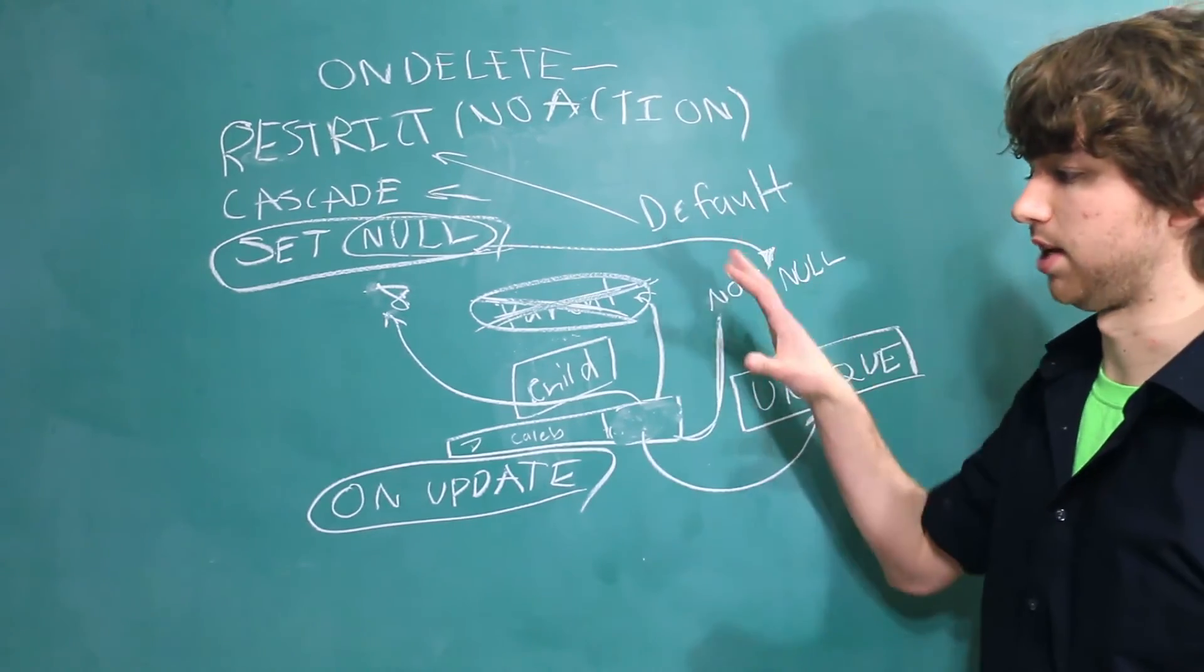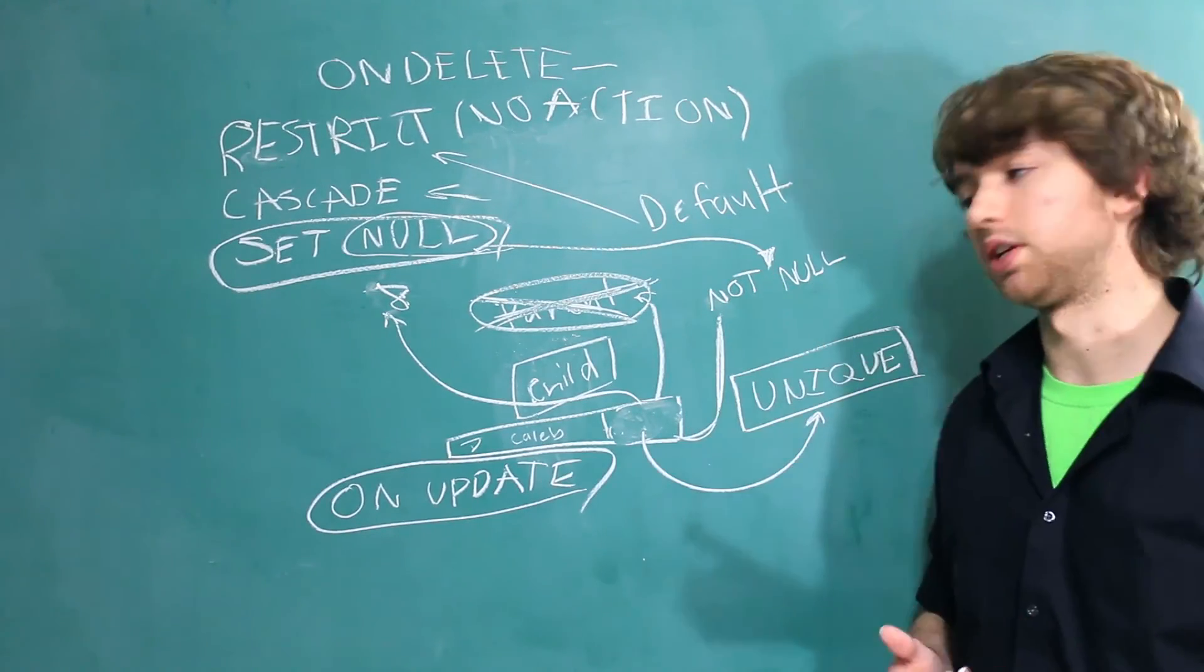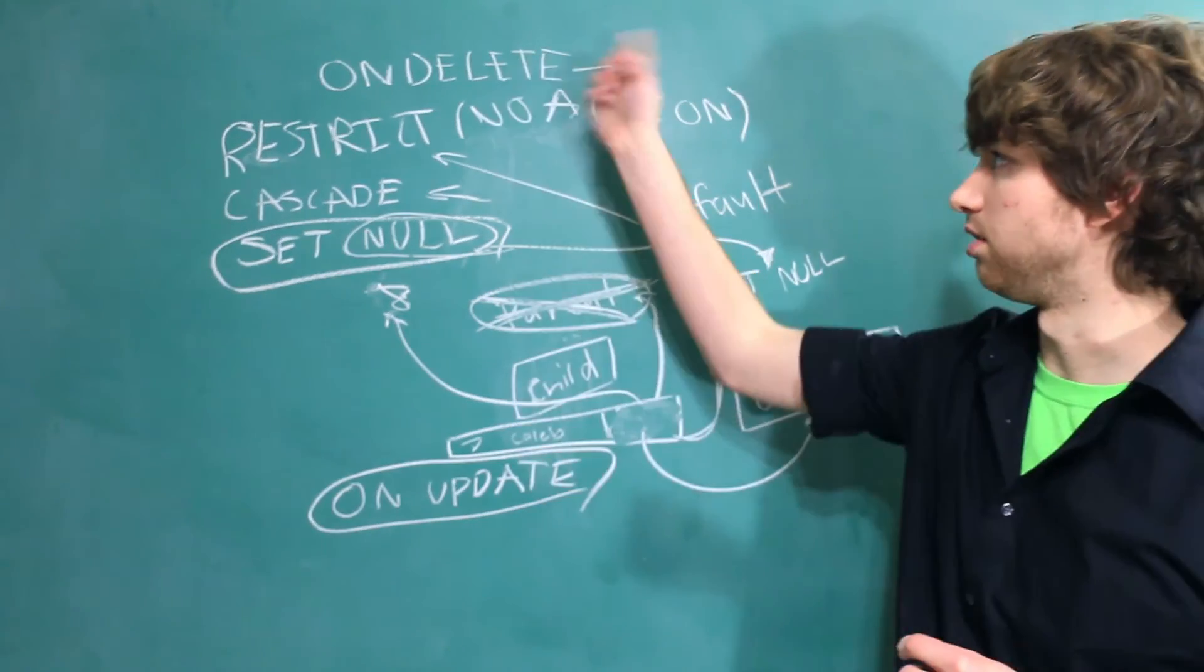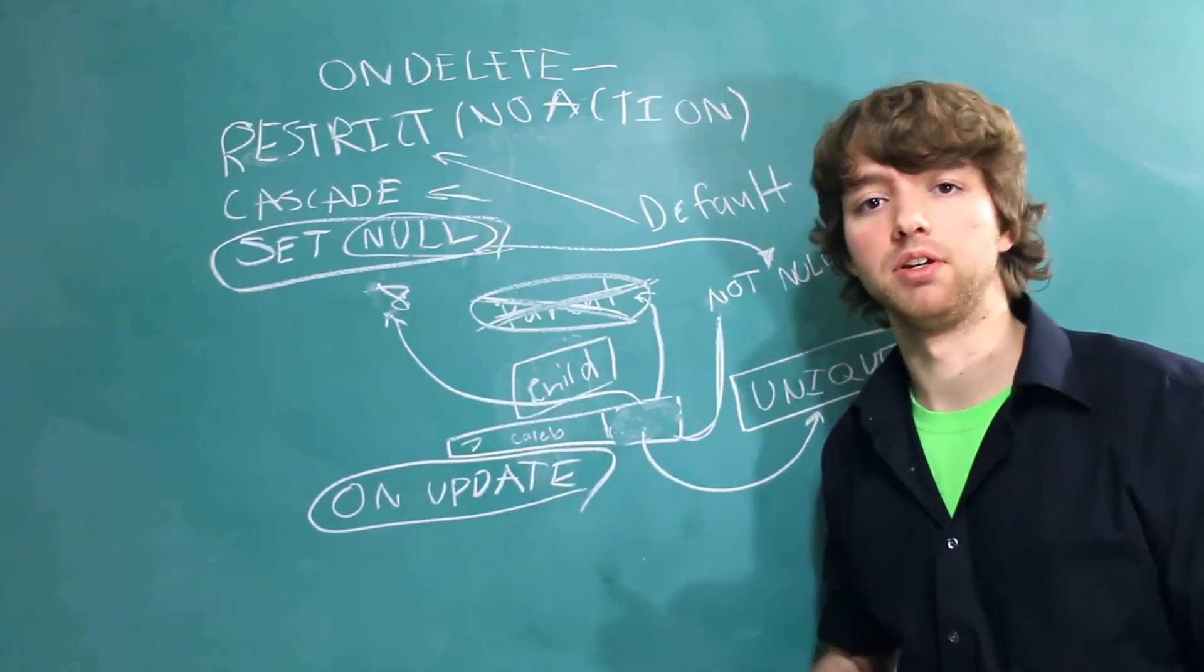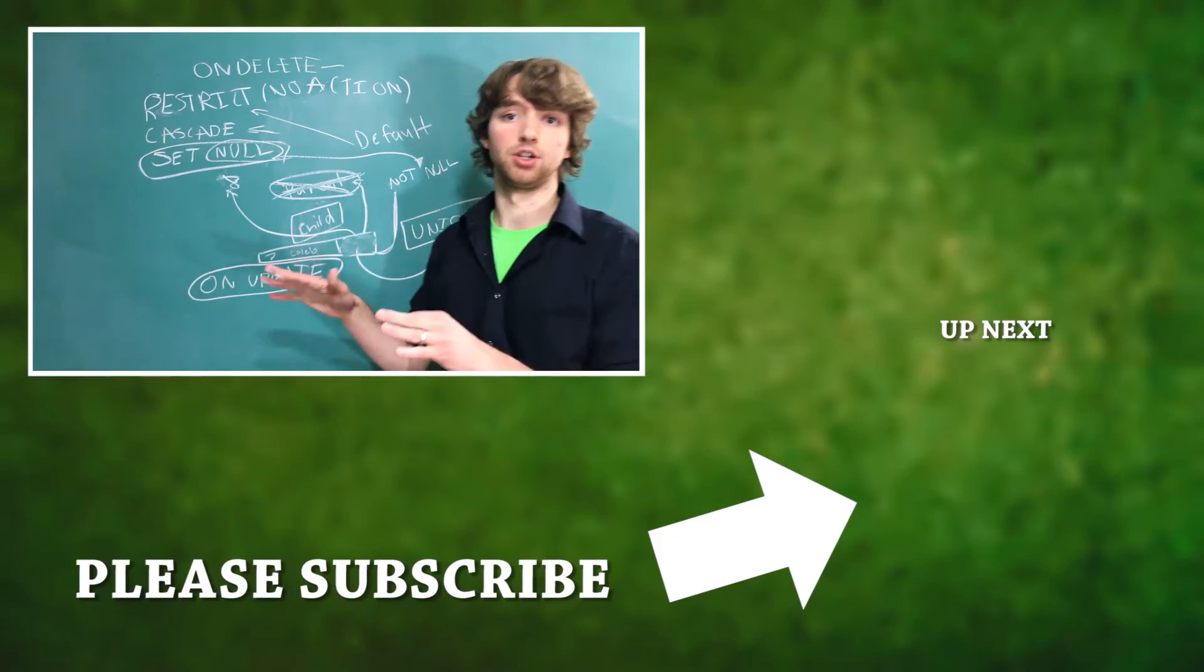Now where do you actually put this information? Well, when you create the foreign key, you will just append OnDelete, whatever, OnUpdate, whatever, and right there in the CreateTable statement. But we'll get into all that when we get to the CreateTable statement.